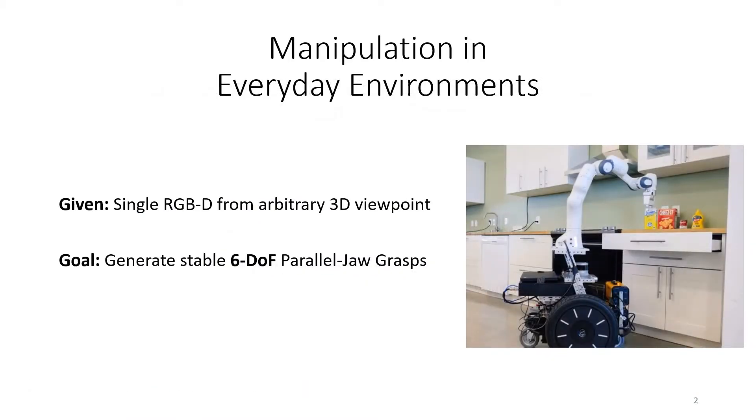Many grasp generation approaches focus on bin picking from a top-down view. We look at the problem of manipulation in everyday environments with structured clutter consisting of unknown objects. In such environments, 3D scans are often infeasible, so we are only given a single RGBD image from an arbitrary viewpoint. The goal is to predict a distribution of stable 6DOF grasp proposals for all visible objects in the scene.